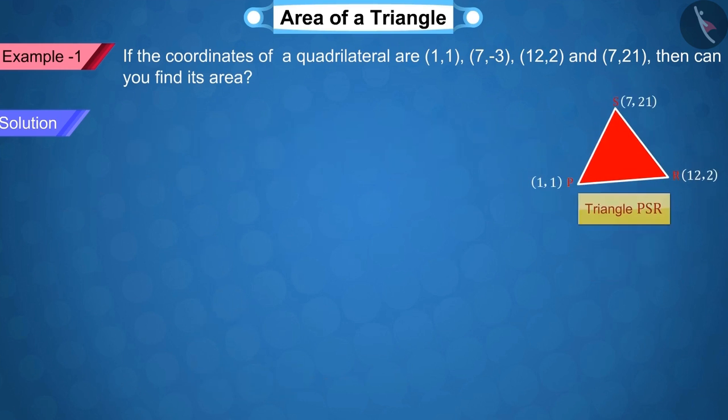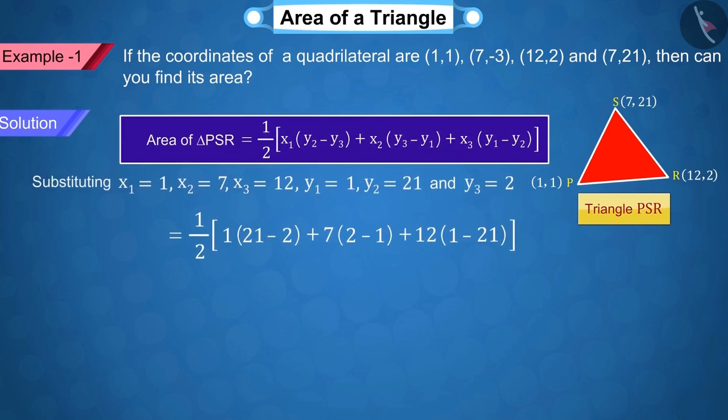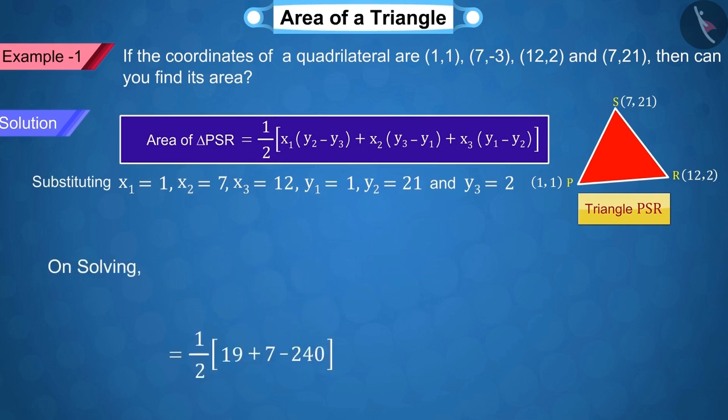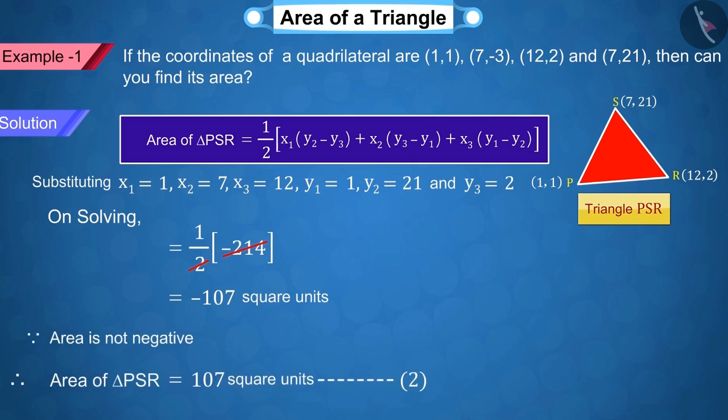Can you find the area of triangle PSR? Correct. Similarly, when we calculate the area of the triangle PSR, we get it as 107 square units.